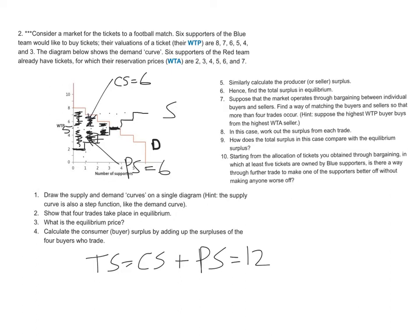Now we're going to think of a counter scenario and we'll suppose that individuals bargain with each other and don't know about what other prices paid are. So let's try to find a way to match buyers and sellers so that more than four trades occur.